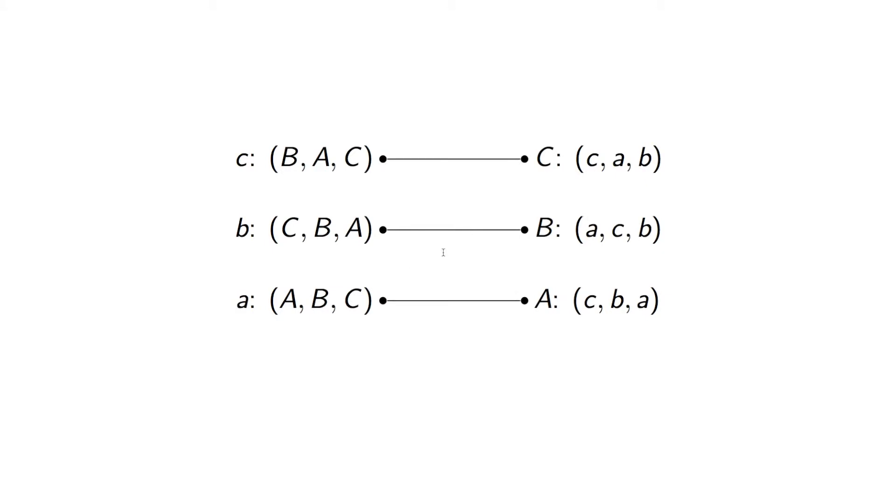For example, we could make this pairing there. However, if we look at this, C actually prefers B, and B prefers A, but also prefers C to B. And so this would not be a stable pairing.